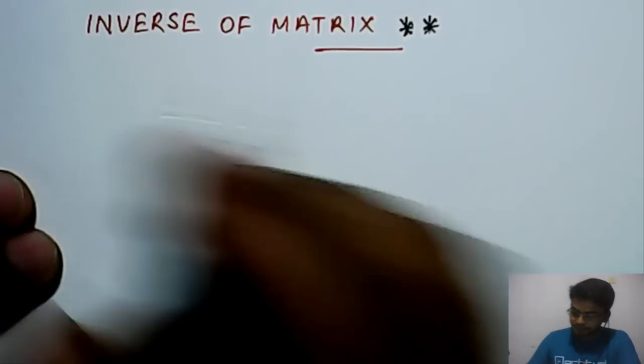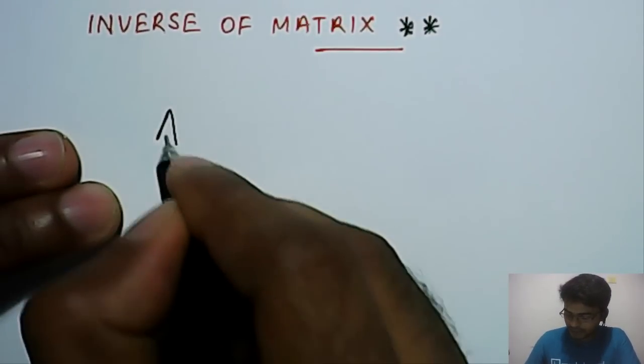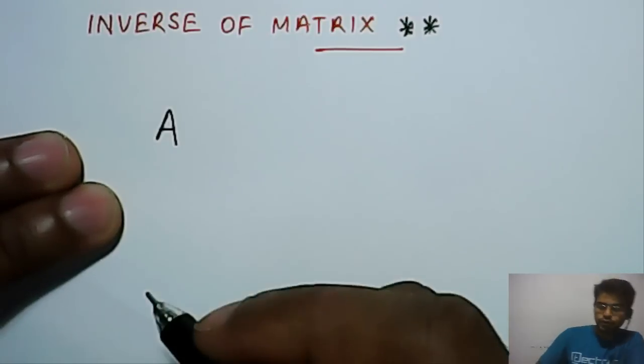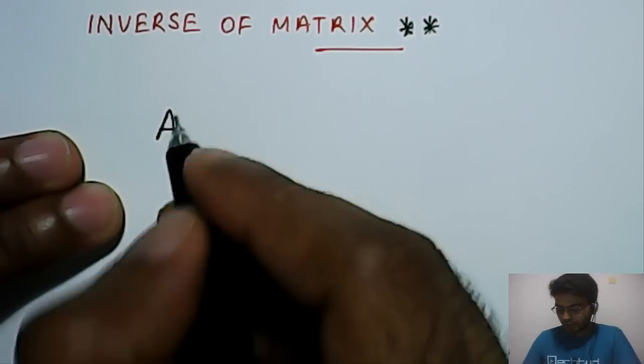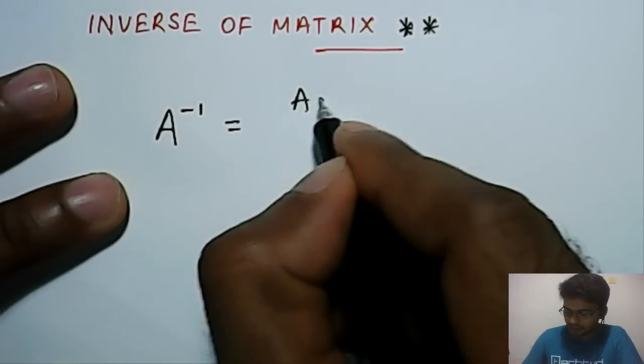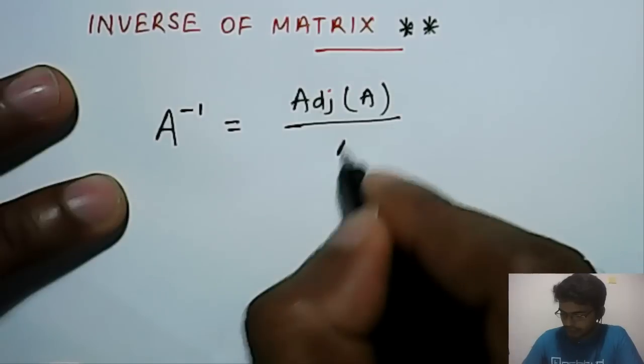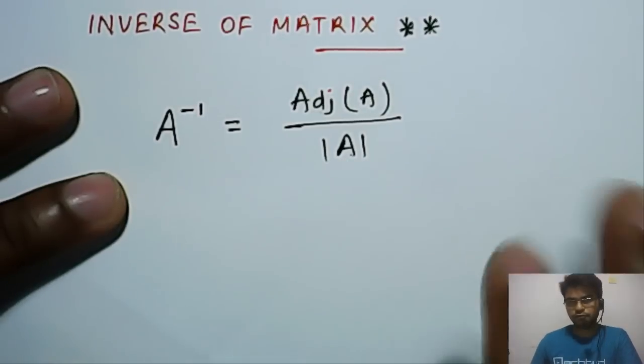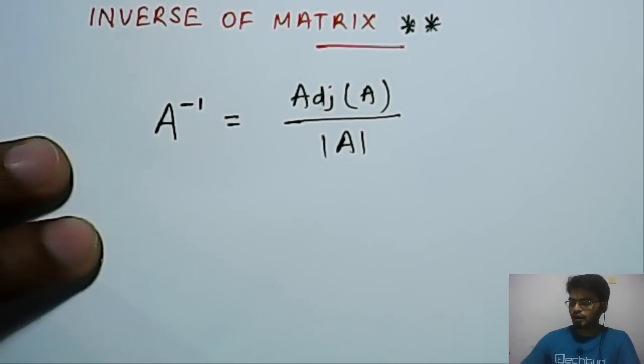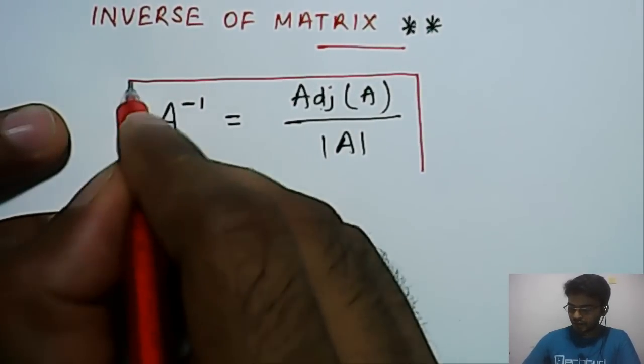So let's get started. First of all, I will write what is the definition of inverse and then we will try to find out few constraints over it. So the inverse of A is equal to adjoint of A upon the determinant of A. This is the basic formula to find out the inverse of a matrix.